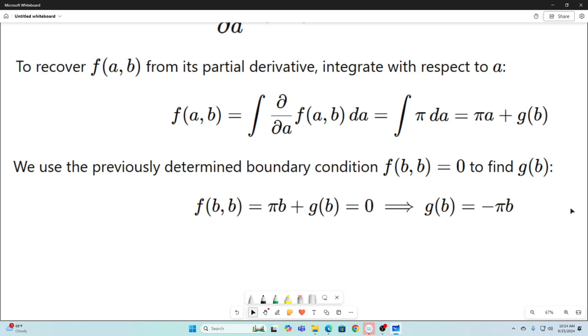OK, we previously determined the boundary condition that f(b,b) is equal to 0. So f(b,b) is equal to, don't forget, this is our f(a,b) right here, so we replace all a's with a b. So f(b,b) is equal to πb plus g(b). But it's also equal to 0. Don't forget, f(b,b) is equal to 0. And from that equality, you can see that g(b) is going to be equal to negative πb. So we are done.